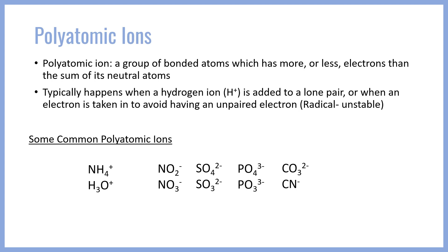We also have carbonates, which is a CO3 2- species, and CN-, the cyanide ion. Finally, we also have the oxyanions for chlorine: perchlorate, chlorate, chlorite, and hypochlorite, all of which are very commonly seen. We want to be comfortable drawing the Lewis structures for all of these ions by the end of this video.